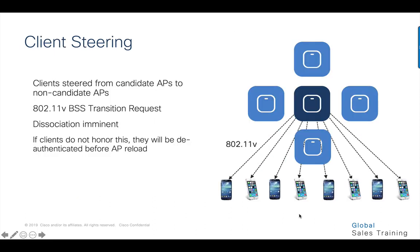Clients from candidate APs are then actively steered away using 802.11v packets with the association imminent flag set, to make sure that we have seamless network connectivity as APs are being upgraded. For clients that do not honor 802.11v, they can rely on the next best option, which is 802.11k.